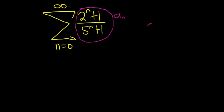Well when n is big, so right now we have 2 to the n plus 1 over 5 to the n plus 1. And so when n is big we can pretty much ignore the ones. So this behaves like 2 to the n over 5 to the n, and this is the same thing as 2 over 5 to the n.